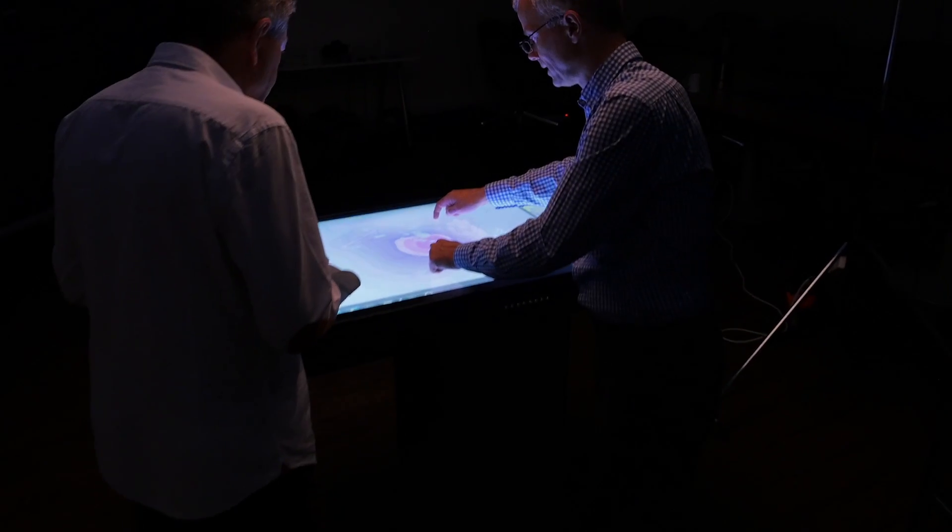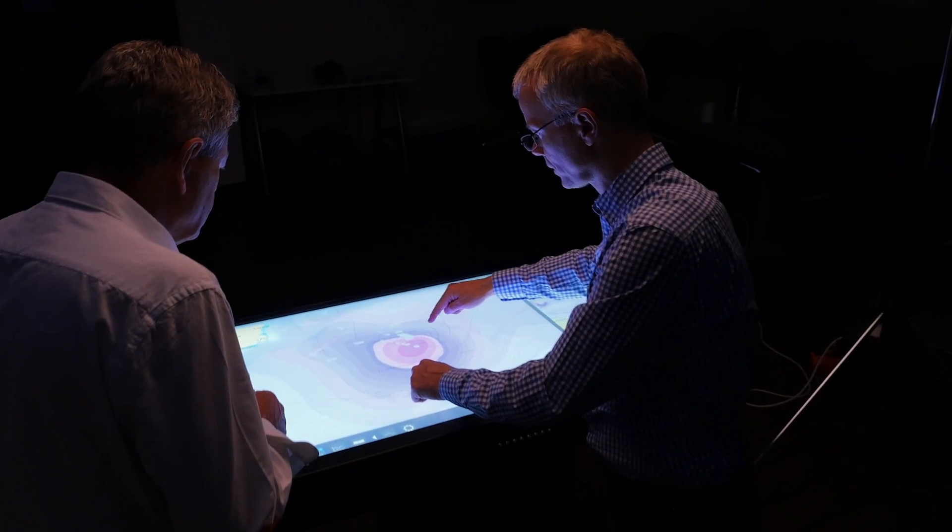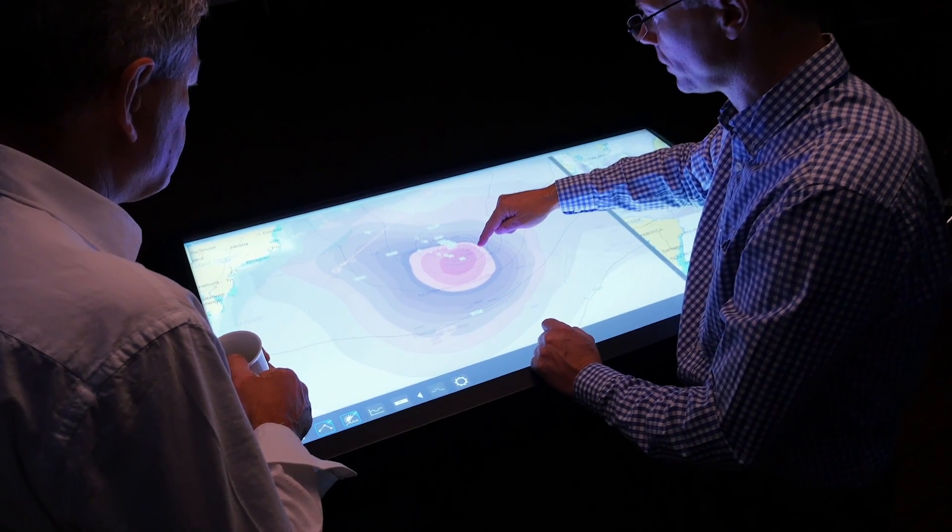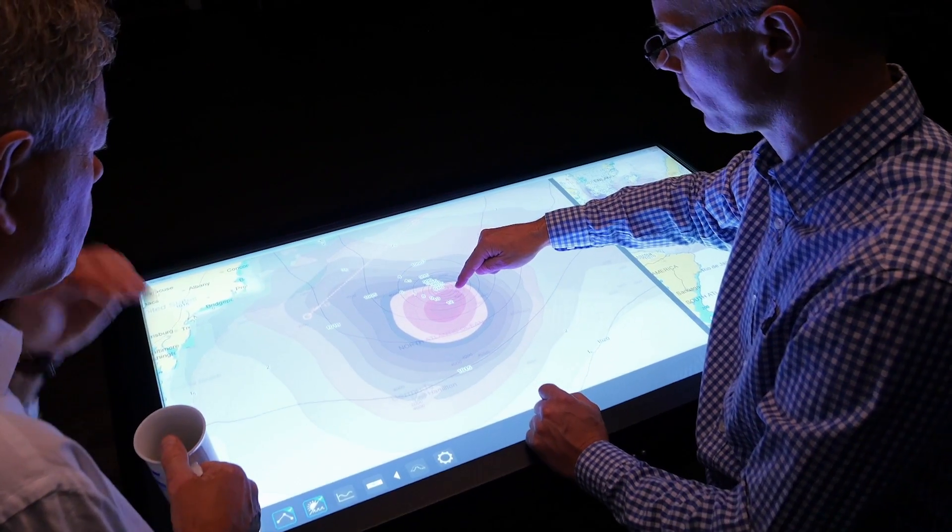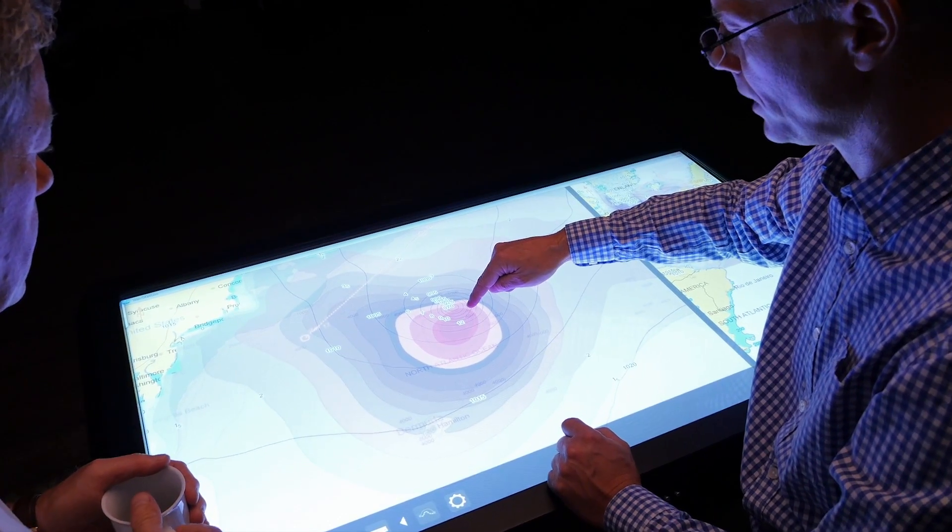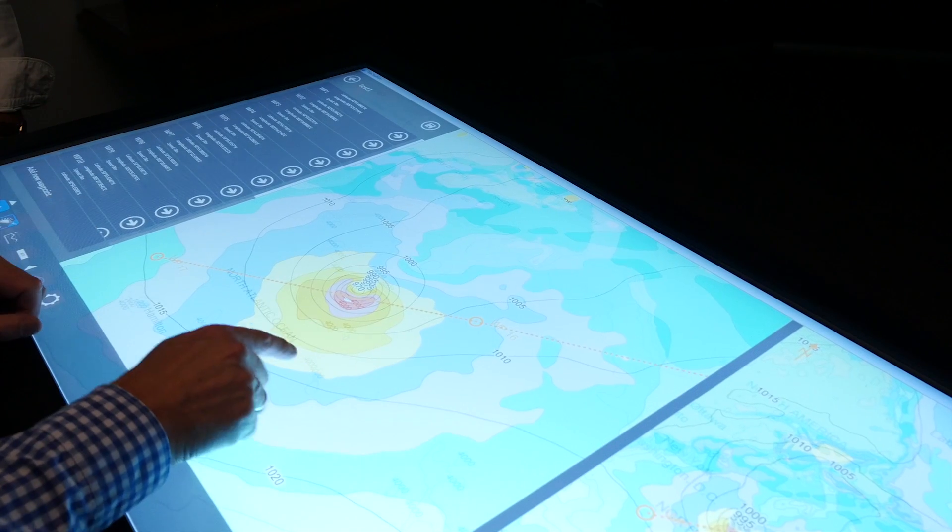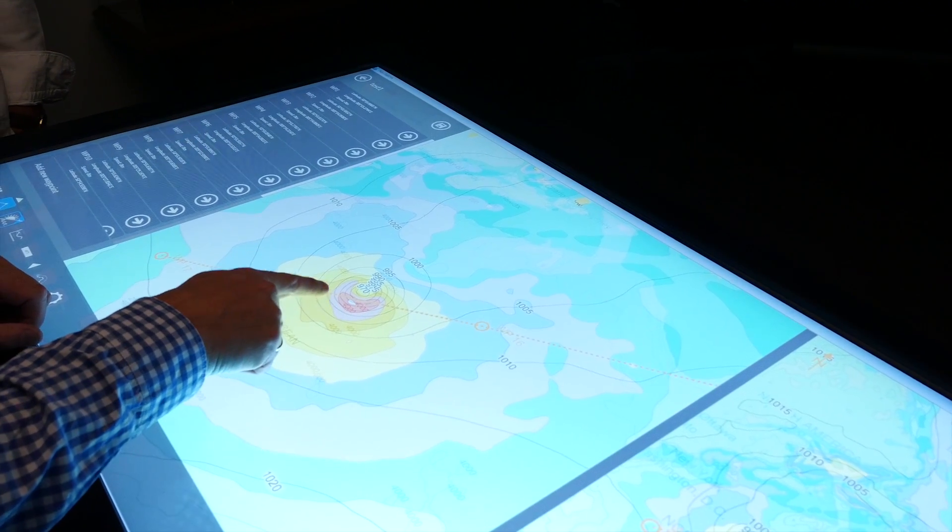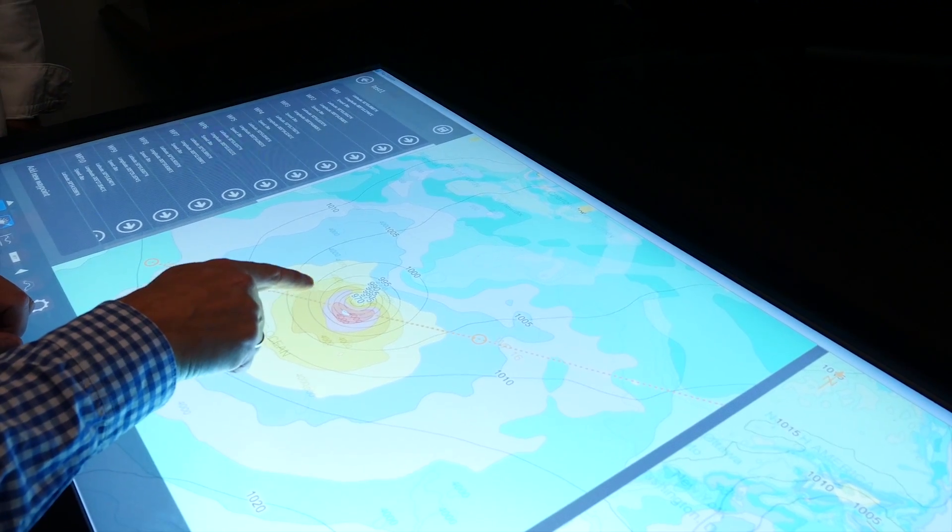The latest weather data from Applied Weather Technologies, AWT, can be overlaid on the nautical charts to give you a detailed weather forecast. This allows you to easily identify highs and lows, storms and areas of concern over the coming weeks.